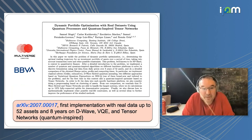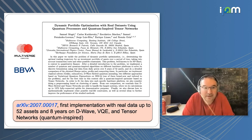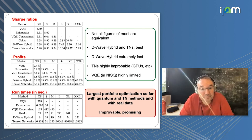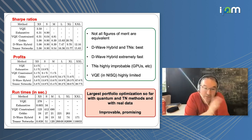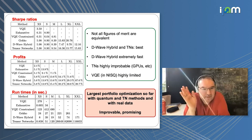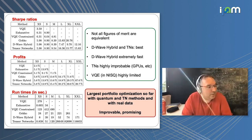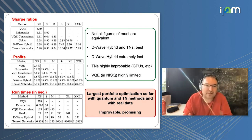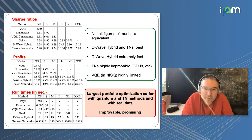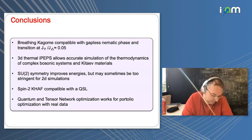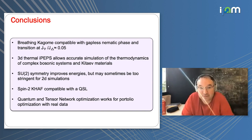We did this in collaboration with BBVA, a Spanish bank. We ran an optimization for 52 assets over eight years of real data from indices like the S&P 500 or NASDAQ, and used DMRG to optimize the portfolio. It actually works — simple MPS-based tensor network algorithms reach state-of-the-art solutions comparable to other optimization methods, and in some cases better. The take-home message: tensor networks are useful beyond quantum many-body physics because at the end of the day everything looks like an Ising model.